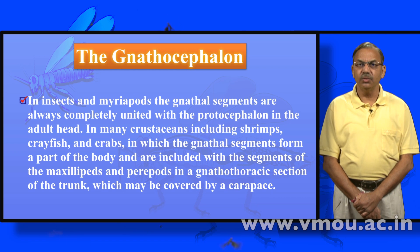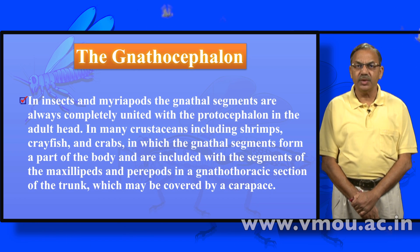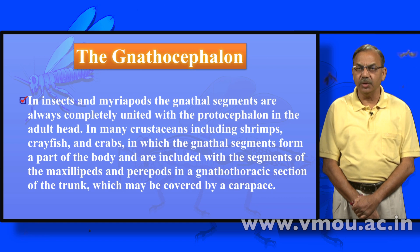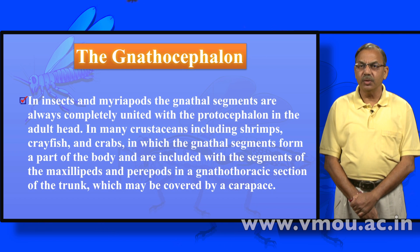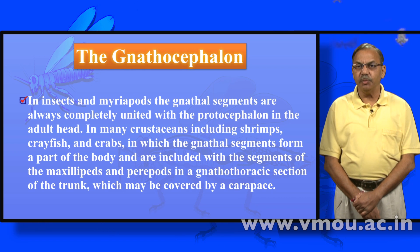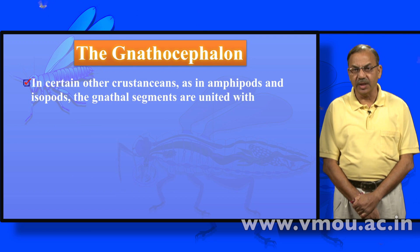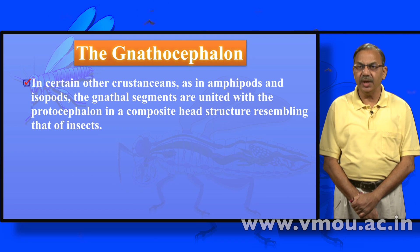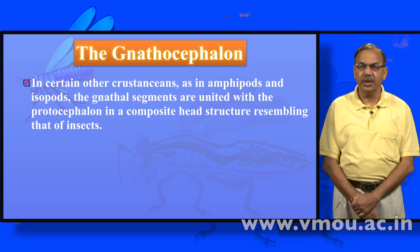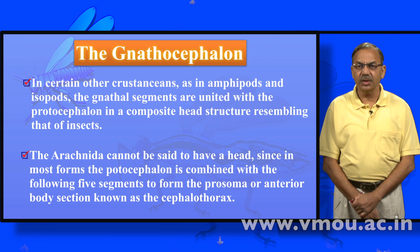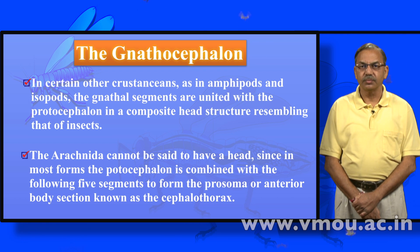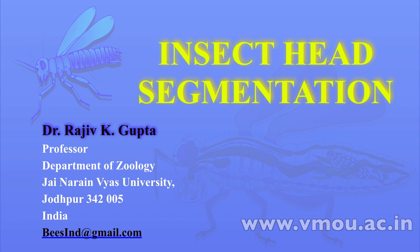In many crustaceans including shrimps, crayfish and crabs, the gnathal segments form a part of the body and are included with the segments of the maxillipedes and pereiopods in a gnathothoracic section of the trunk, which may be covered by a carapace. In certain other crustaceans such as amphipods and isopods, the gnathal segments are united with the protocephalon in a composite head structure resembling that of insects. The Arachnida cannot be said to have a head, since in most of them the protocephalon is combined with the following segments. This concludes the discussion about insect head segmentation. Thank you.